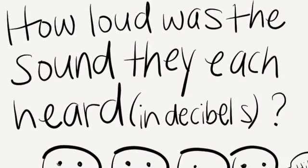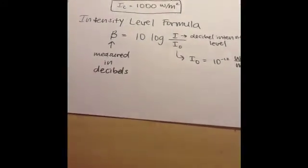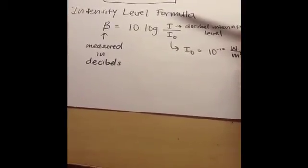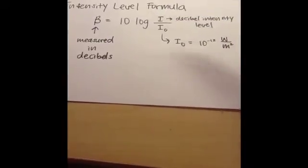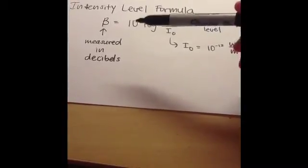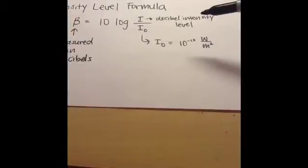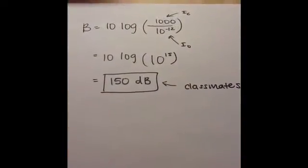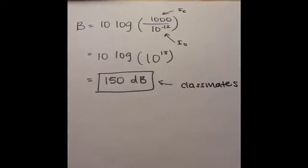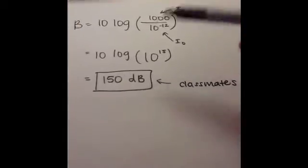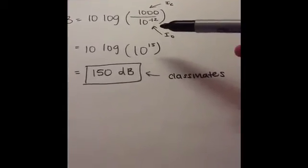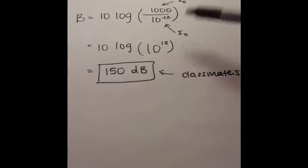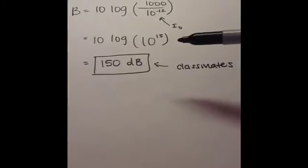Our first question asked how loud was the sound they each heard in decibels. The classmates' intensity is 1,000 watts per square meter. To solve this, we use the intensity level formula: B = 10 log(I / I₀), where B is the intensity level in decibels, I is the intensity, and I₀ equals 10⁻¹² watts per square meter. Plugging in 1,000 for I and 10⁻¹² for I₀, that comes down to 10 log(10¹⁵), which equals 150 decibels — that's how loud the classmates heard it.